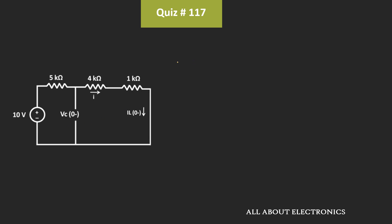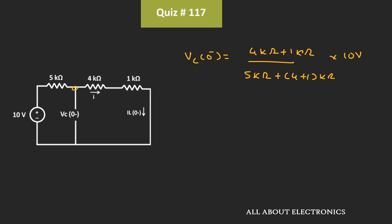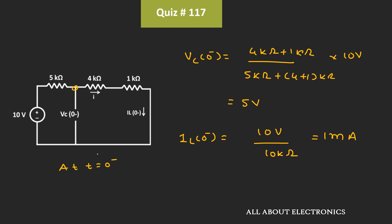In this condition, the voltage across the capacitor, that is Vc(0-), will be equal to (4kΩ + 1kΩ) divided by (5kΩ + 4kΩ + 1kΩ) times 10V. That means the voltage at this node will be equal to 5V. Similarly, the inductor current Il(0-) will be equal to 10V divided by the summation of all these resistors, that is equal to 10kΩ. That means at t is equal to zero minus, the current through the inductor will be equal to 1mA. So, at time t is equal to zero minus, the voltage across the capacitor is 5V, while the current through the inductor is equal to 1mA.